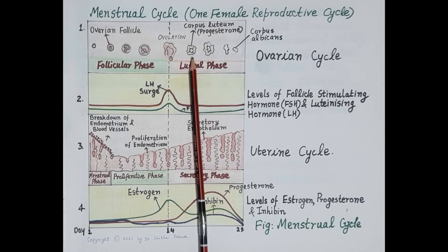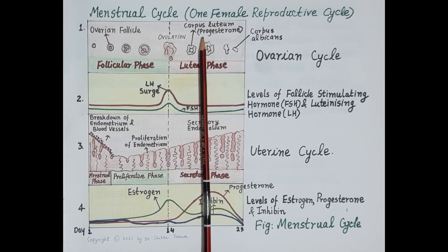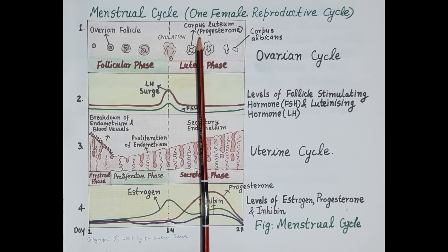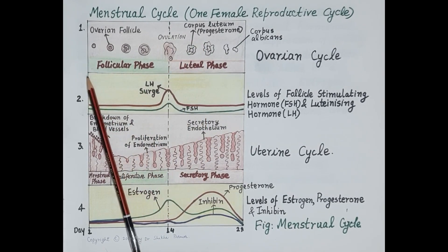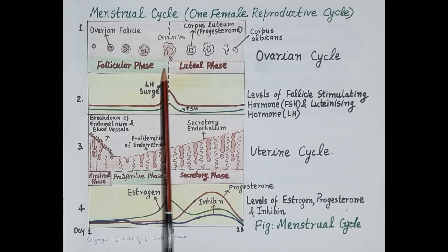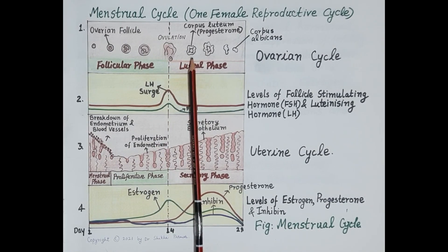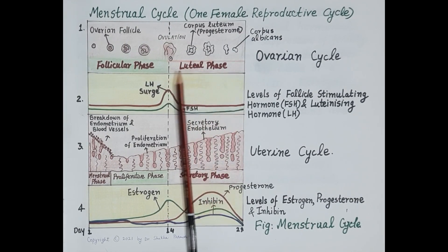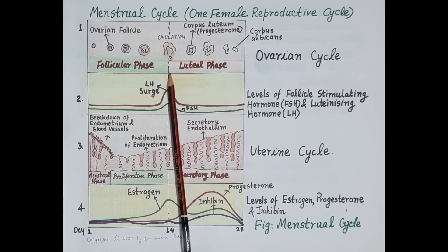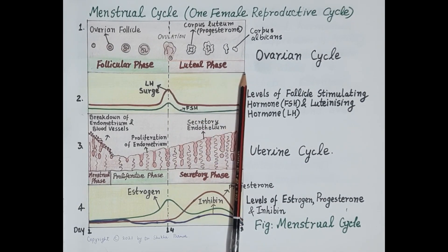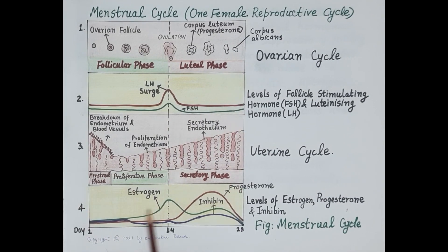This dominant follicle develops and ruptures on day 14, releasing an egg. The ruptured follicle gets transformed into a structure called the corpus luteum, which produces a large amount of progesterone and a comparatively small amount of estrogen. Progesterone is not produced in the first half of the reproductive cycle — it is only produced after the formation of the corpus luteum, during the second half, from day 15 to day 28.